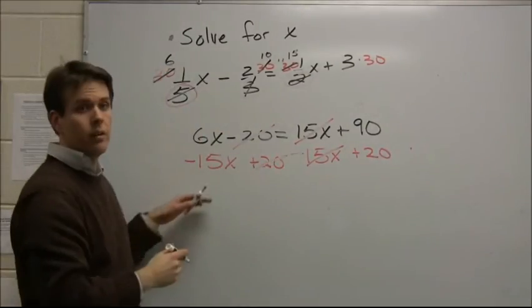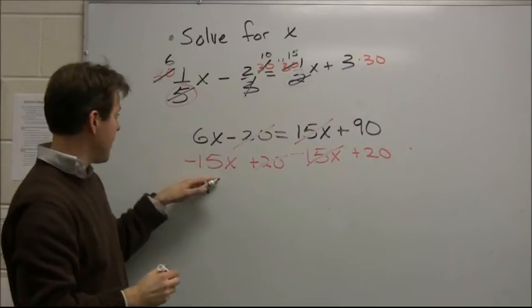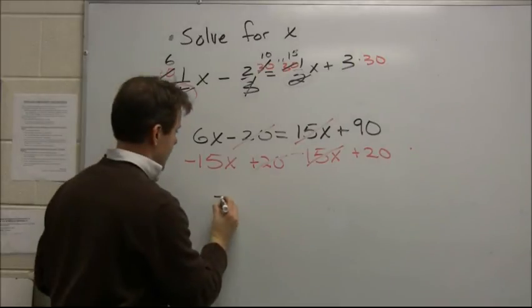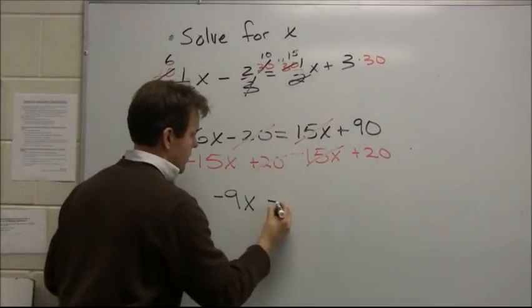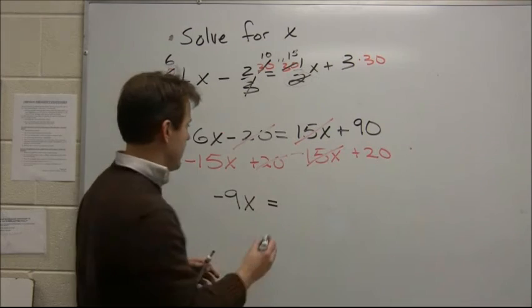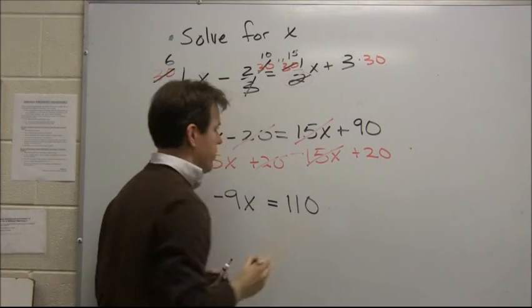So what am I left with on the left-hand side? Six x minus 15x is negative nine x equals, I've got 90 plus 20, that's 110.